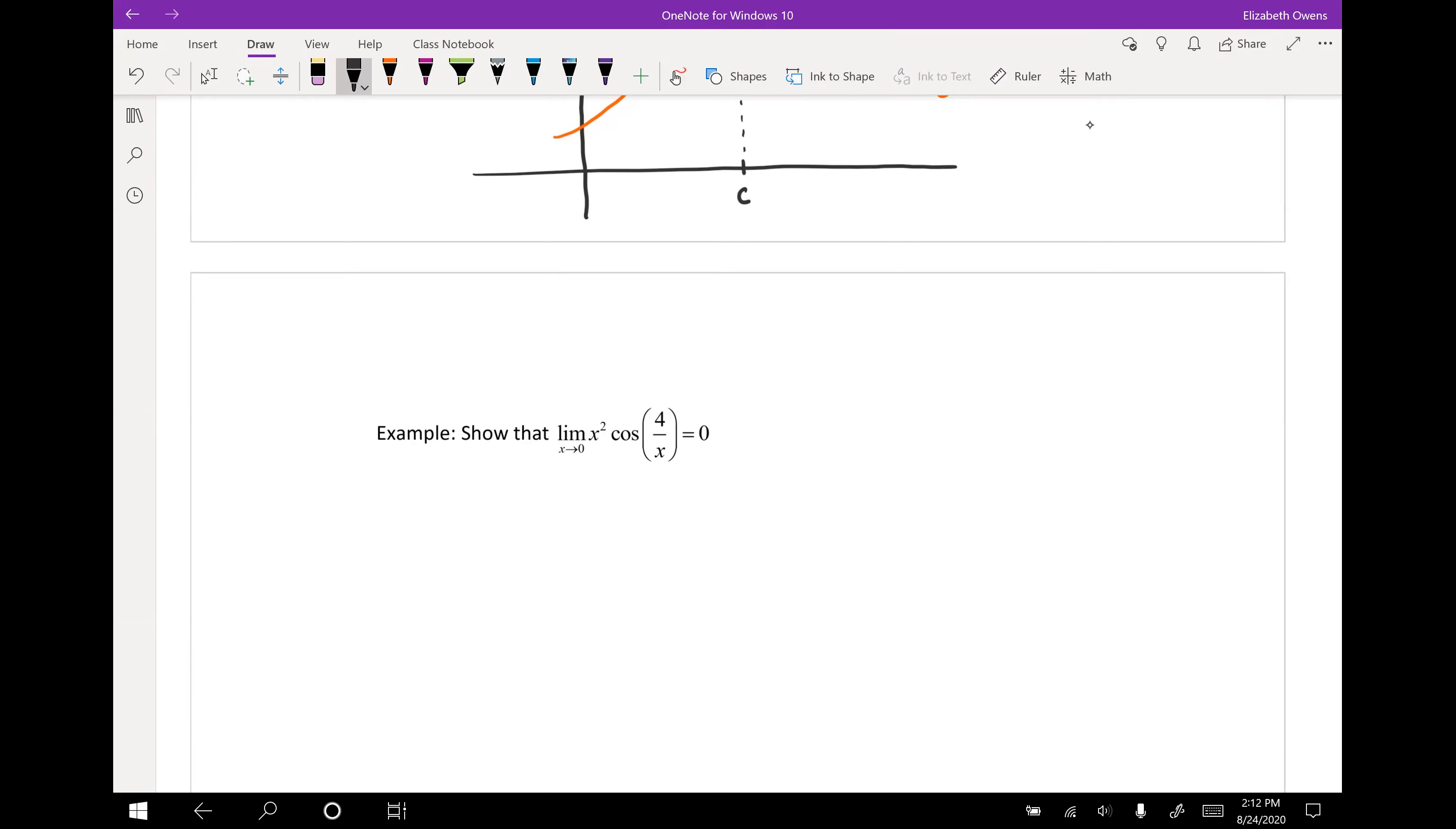So we're going to do this in a couple steps here, and first is going to be setting up our sandwich. We are going to find g of x and h of x that sandwich our little filling function here, f of x, which equals x squared cosine four over x.